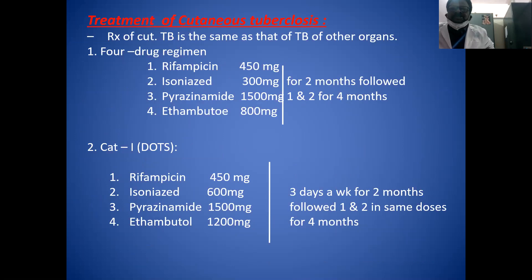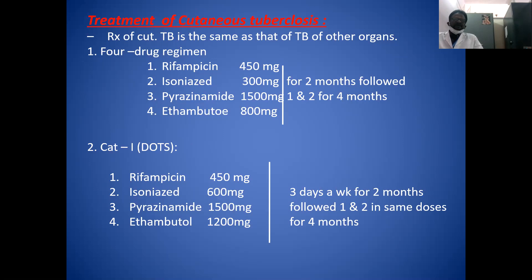The treatment of cutaneous tuberculosis is the same as for TB of other organs like the lungs. There are two types of regimens. One is a four-drug regimen (Category 1): rifampicin, isoniazid, pyrazinamide, and ethambutol for two months, followed by rifampicin and isoniazid for the remaining four months. The second regimen is the DOTS (Category 1) regimen using the same four drugs but with variable intermittent dosing.